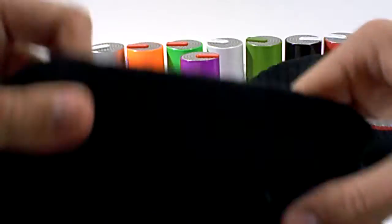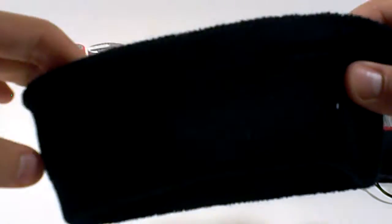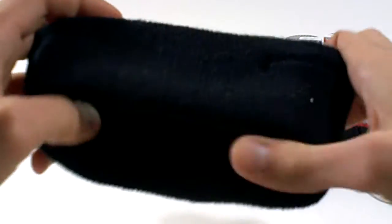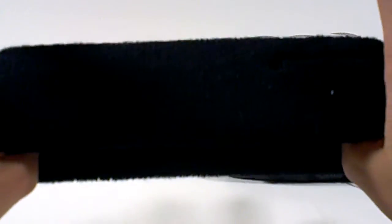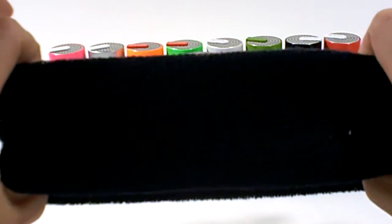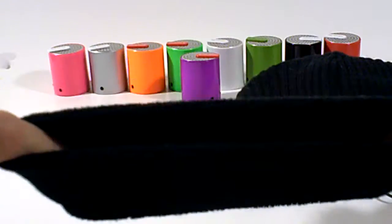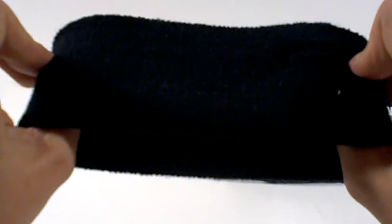And then this is the headband. Pretty standard headband. The speakers are built into the sides so you can wear this as a headband if you're running and you don't want to have too much heat like with the beanie or something else. You can put this on and use it as a headband with speakers inside.